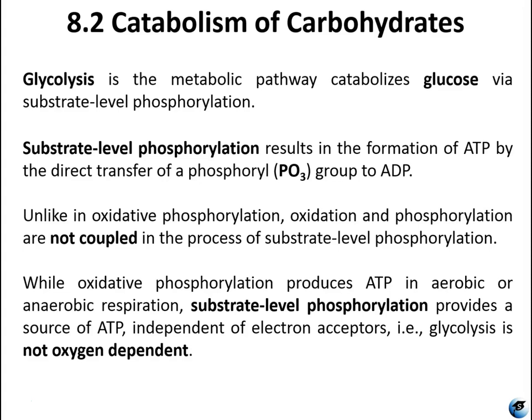Glycolysis is one of the three major metabolic pathways — glycolysis, Krebs cycle, and the electron transport chain. We talked about the electron transport chain in lesson seven. Glycolysis catabolizes glucose via substrate-level phosphorylation. Substrate-level phosphorylation forms ATP by directly transferring a phosphoryl group to ADP from another phosphorylated compound, with no intermediate steps involved.